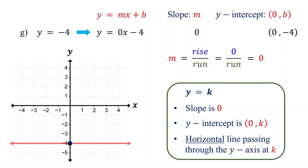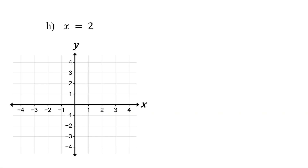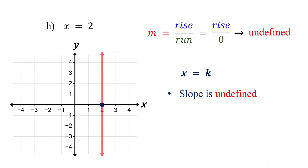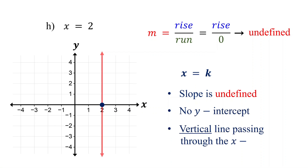Now let's flip the scenario. What happens if there is no y-term in the equation? Since there is no y, this equation cannot be written in slope-intercept form. x = 2 means the value of x is always 2, no matter the value of y. This means there is no run — the line doesn't go right or left. So the slope is undefined. When the slope is undefined, the line is vertical. Therefore, the graph of x = 2 is a vertical line crossing the x-axis at 2. Since the line doesn't cross the y-axis, it has no y-intercept. Instead, it has an x-intercept, which is (2, 0). In general, if an equation is in the form x = k, where k is a constant, then the slope is undefined, there's no y-intercept, and the graph is a vertical line passing through the x-axis at k.